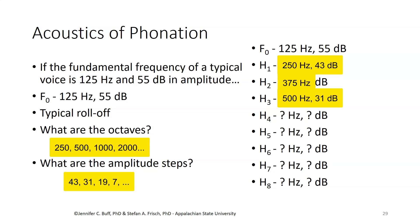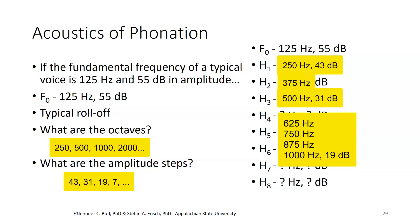For the fourth, fifth, sixth, and seventh harmonics, we have frequencies of 625, 750, 875, and finally 1,000 Hz, going from 31 dB for the third harmonic to 19 dB for the seventh harmonic — again, increasing an octave and losing 12 dB of amplitude. We can compute dB values easily only for those octave steps, not for every individual harmonic.